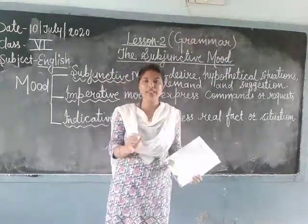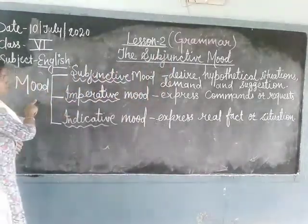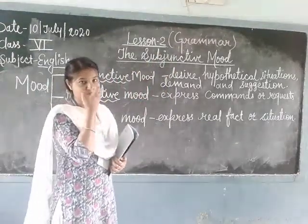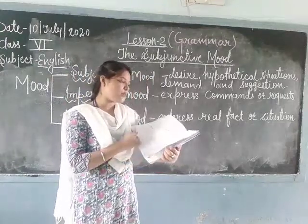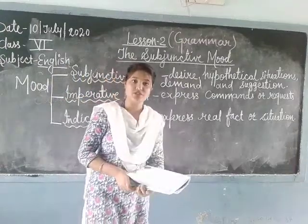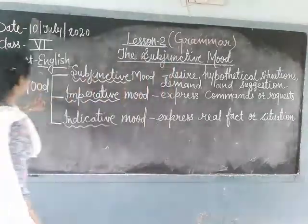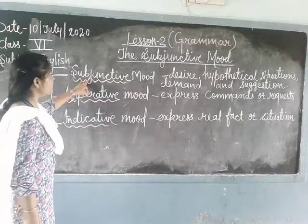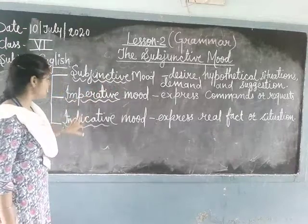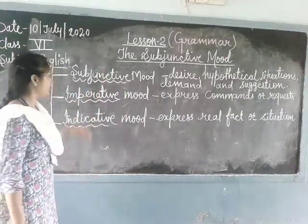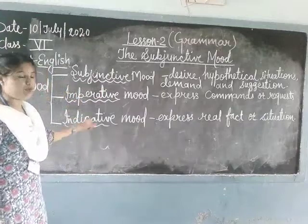There are three types of moods. Actually there are 5 types of moods, but in your Lesson 2, only three moods are defined. Mood has three kinds: first, subjunctive mood; second, imperative mood; and third, indicative mood. Subjunctive mood, imperative mood, and indicative mood.